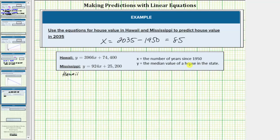The predicted median home value in 2035 would be equal to y, which equals 3966 times 85 plus 74,400.